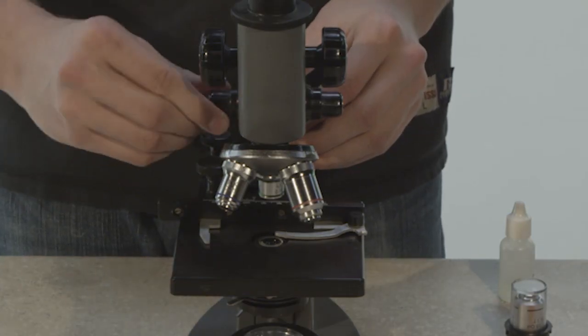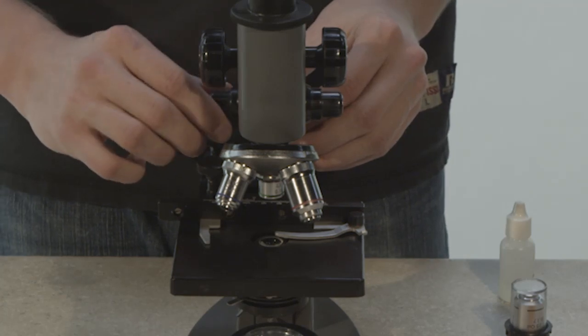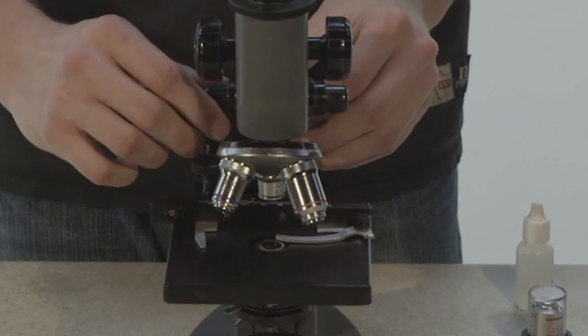This is the fine adjustment knob. It is used more for higher magnification lenses to focus on specific parts of the slide being evaluated.